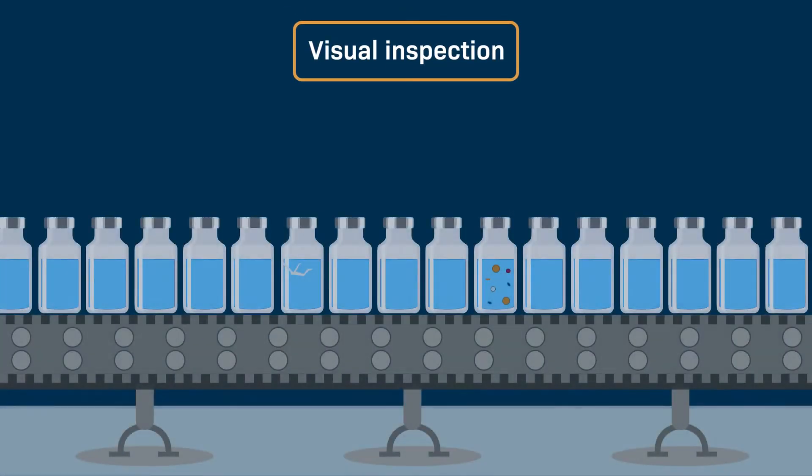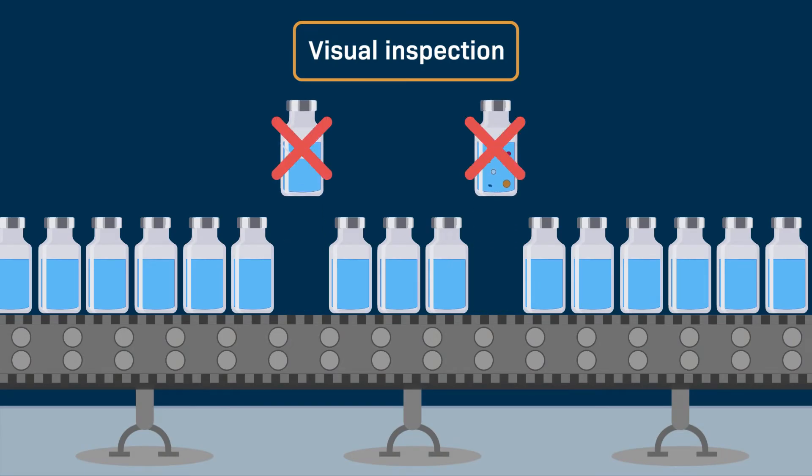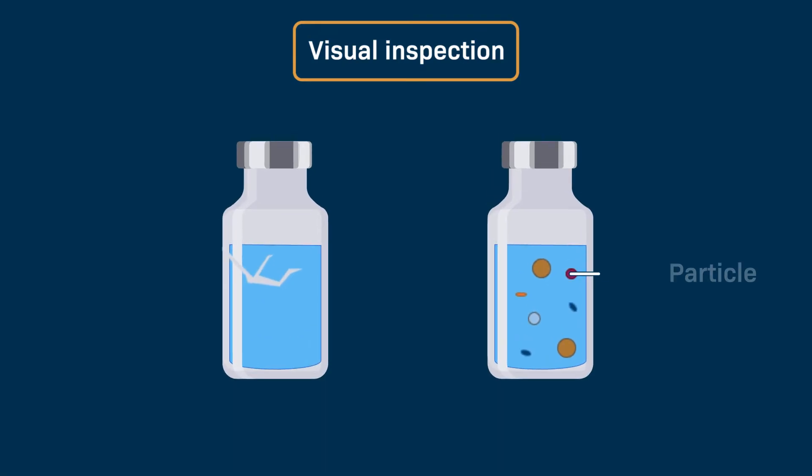Visual inspection is performed on each container in a drug batch to identify and reject those that have visible defects, such as particles in the formulated drug or cracks in the containers.